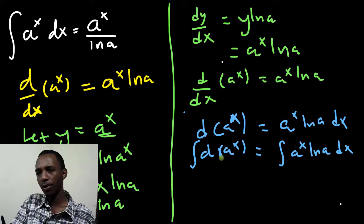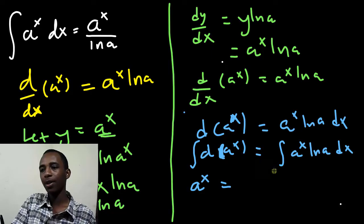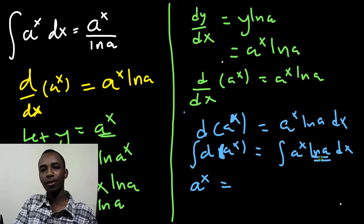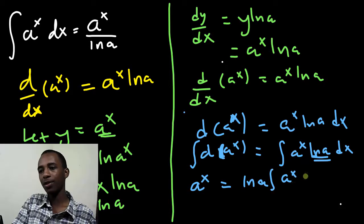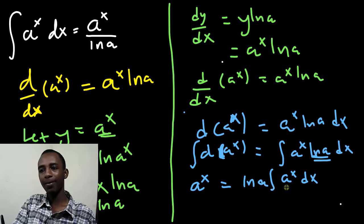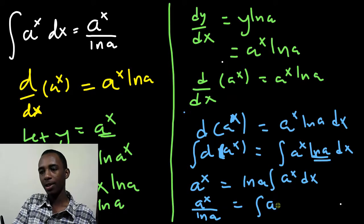So, the integral of this is actually just a to the x. And then, I can factorize out the natural log of a, since it's a constant. So, the natural log of a times the integral of a to the x. And I can divide by natural log of a on both sides. So, a to the x divided by the natural log of a is the integral of a to the power x dx. And there, I'll have it.